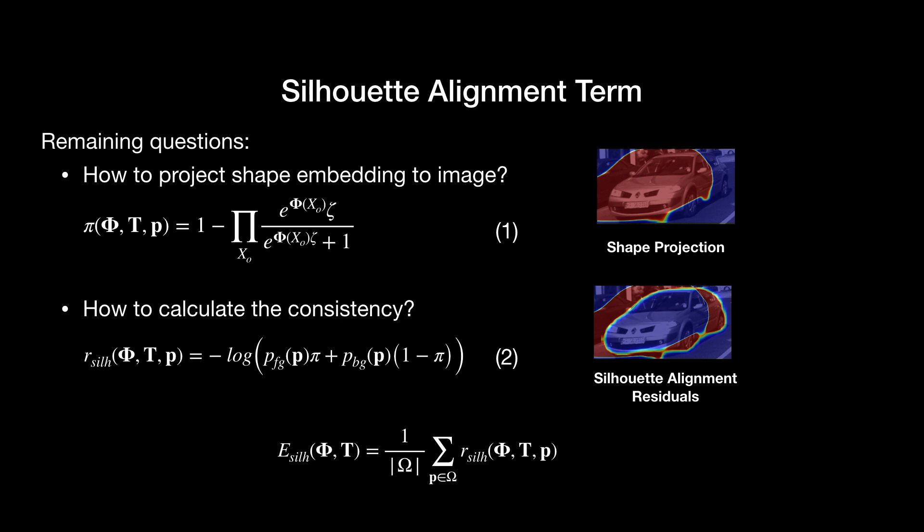The consistency between the two silhouettes is measured as the residuals formulated as equation 2, where p_fg and p_bg are foreground and background probabilities from the object segmentation. Summing up the residuals for all the pixels near the object, we get the silhouette alignment term.